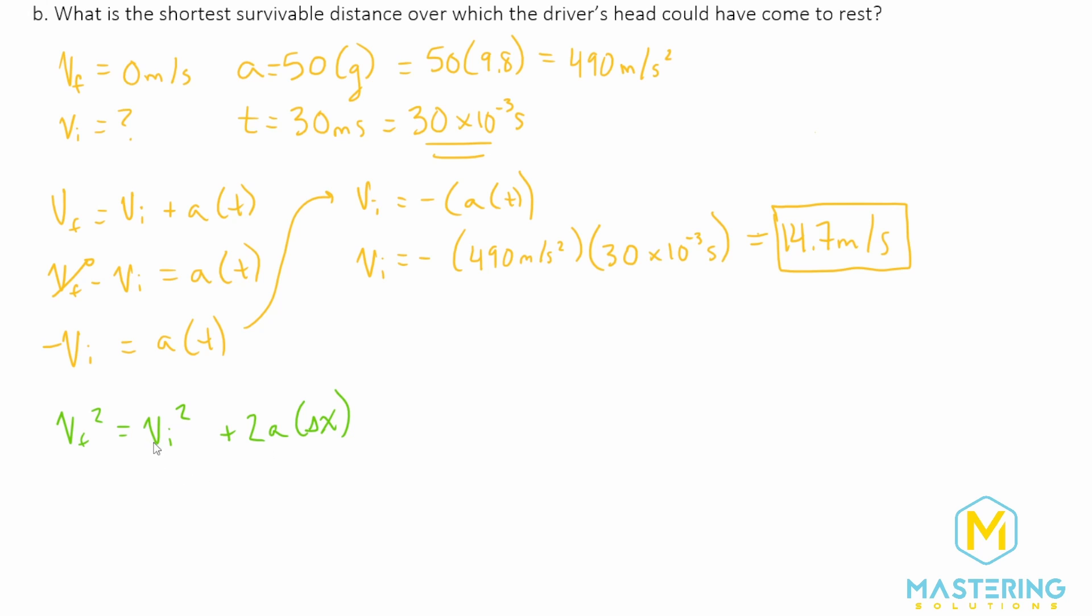So that one that we'll be using is V final squared equals V initial squared plus 2a delta x. So to do that, let's first recognize that this is going to be zero. So V final goes away, like we talked about,